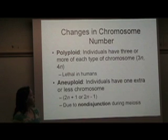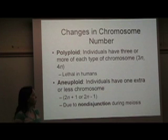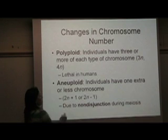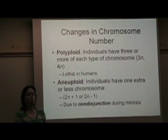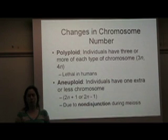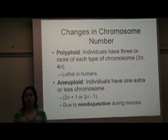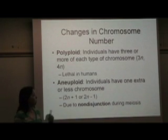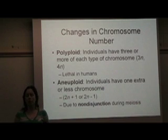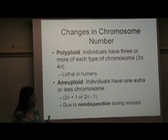The other option is aneuploidy, and this is when individuals have one extra or one less chromosome, so they are 2N plus 1 or 2N minus 1. Remember that humans typically have 46 chromosomes. So an aneuploid individual might be missing one copy of one chromosome, making them 45 chromosomes, or they could have one extra copy of one chromosome, meaning they would have 47 chromosomes.